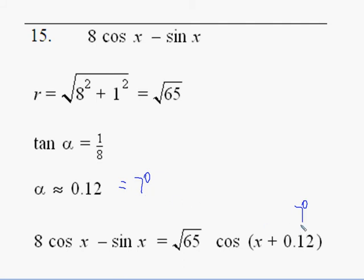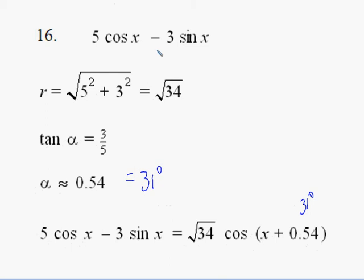So again, if you want to write in degrees, feel free. Five cos x minus three sin x gives us root 34 for R, and inverse tan of three on five gives us 0.54 or 31 degrees, so you can write like that. So there's our four forms.